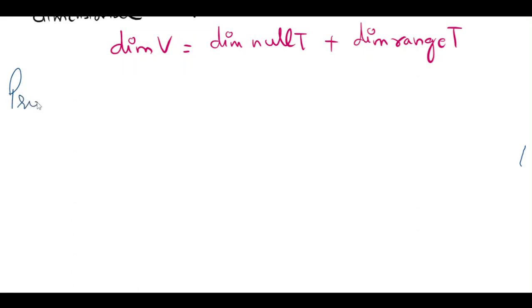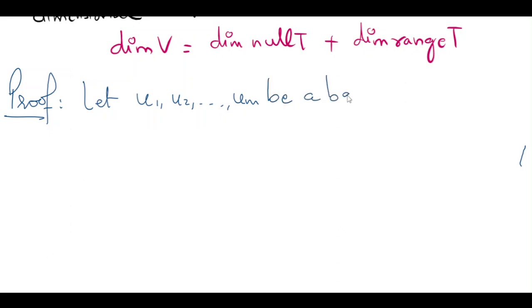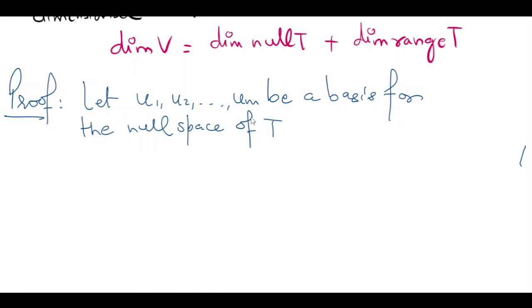Let's start the proof. Let me assume that I have a basis u1, u2, ..., um for the null space of T. If this is a basis, then by definition of basis it is linearly independent and spans the whole null space. From here I can write that the dimension of the null space of T — which I write as dim(Null(T)) — equals m, since there are m linearly independent vectors in this basis.